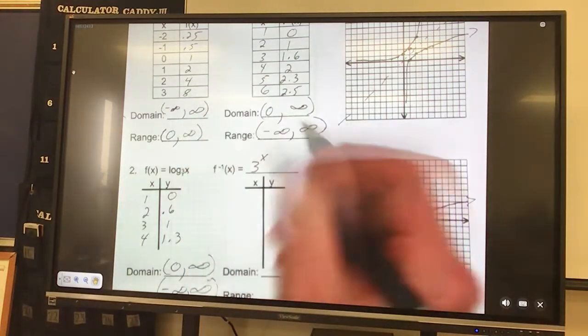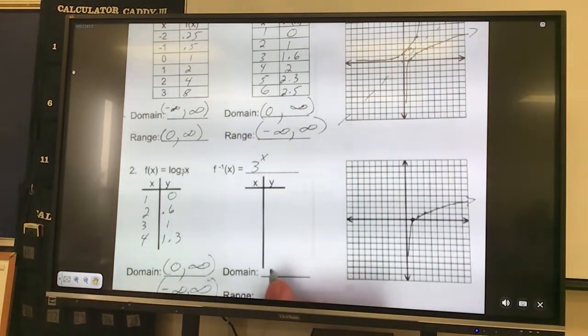So I could actually go ahead and write my domain and range now for the inverse because we said that they flipped. So my domain should be negative infinity to infinity and my range would be the domain of the first one, which is 0 to infinity. Now let's take a look and see.